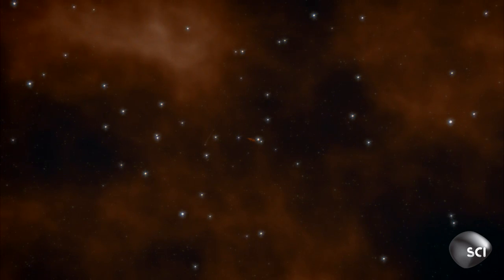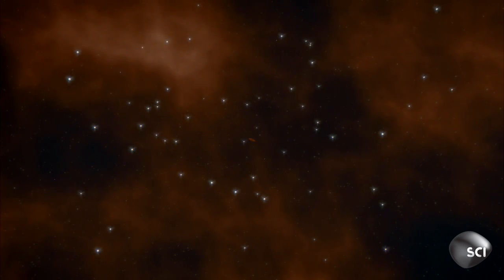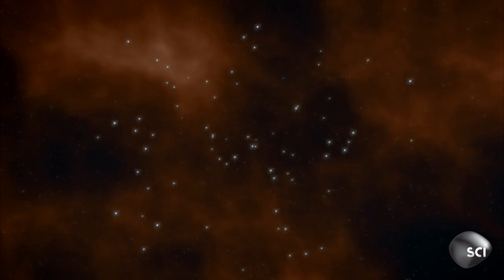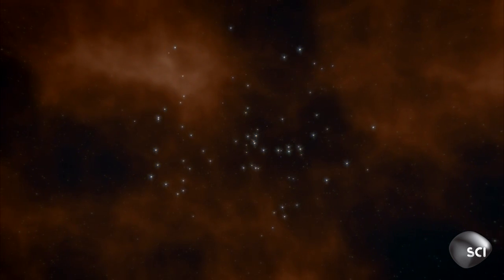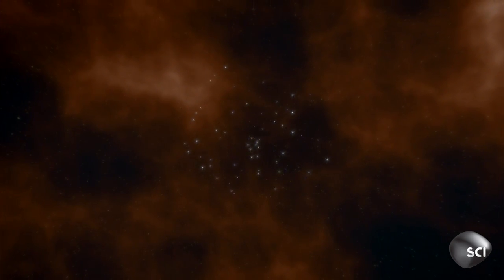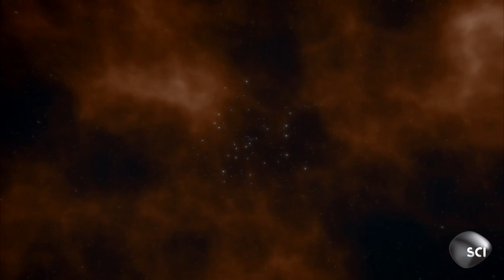A black hole's intense gravity pulls passing stars into orbit. Their combined mass attracts more and more stars and slowly forms the galaxies we see today.